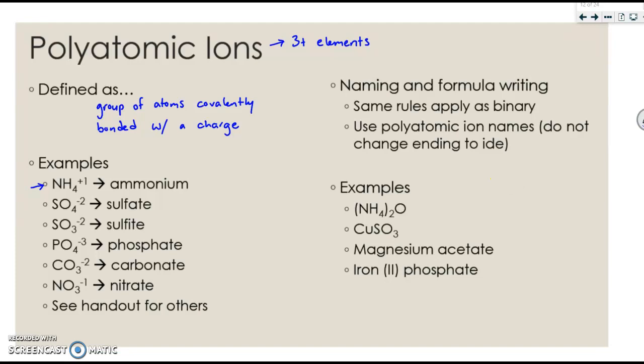So here you can see these are all going to be polyatomic examples. You would know this first one was because you see three elements. Another clue is the parentheses. That usually also means polyatomic ion. So NH4 is ammonium, and then the O is still oxide. So the same rules apply for everything else.